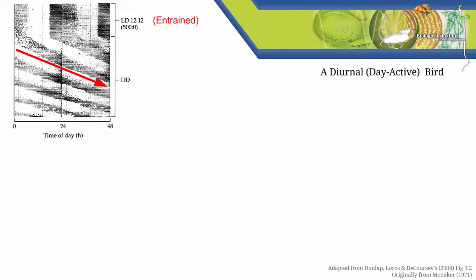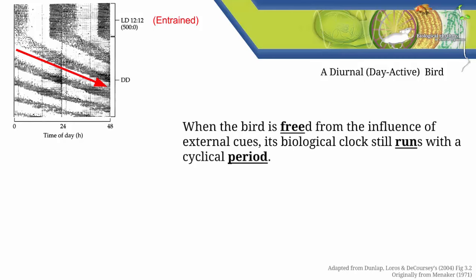The bird's activity is still rhythmic it's just that its rhythm isn't exactly 24 hours anymore. It's slightly more than 24 hours. But the key point is that when the bird is freed from the influence of external cues its biological clock still runs with a cyclical period. The length of time it takes for the cycle to repeat is the bird's free running period or FRP. We ran some calculations and under these conditions this bird's FRP was estimated to be close to 26 hours. You'll often see the Greek letter tau used as a symbol for free running period and so we could also say that tau is close to 26 hours. When we talk about an organism's rhythmic behaviors under constant conditions we say the organism is free running.